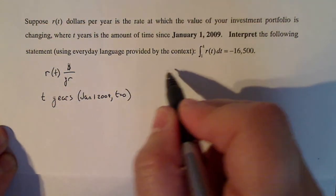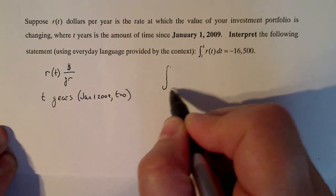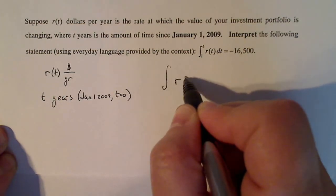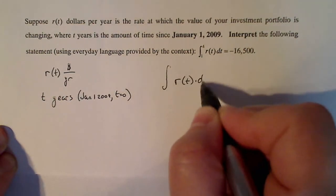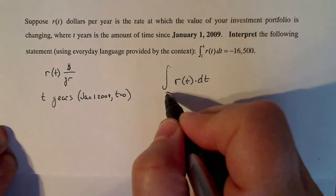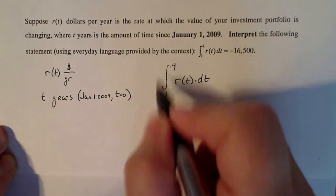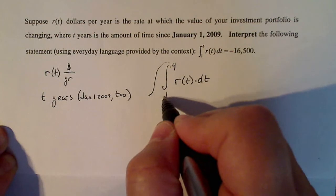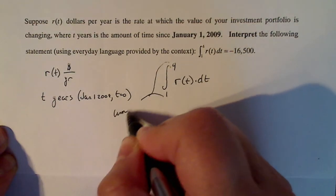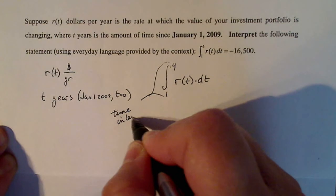Now, if I think about how this integral is set up, I'm adding up a sum of the product of R(t)dt over a time interval from one to four. So these two numbers here is a time interval over which this calculation is taking place.